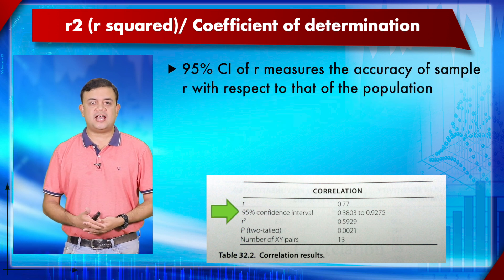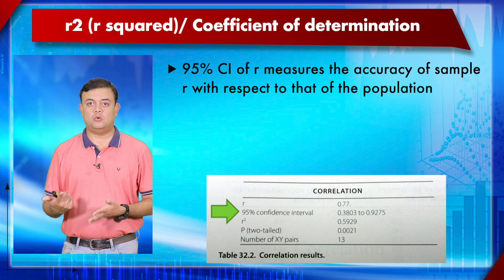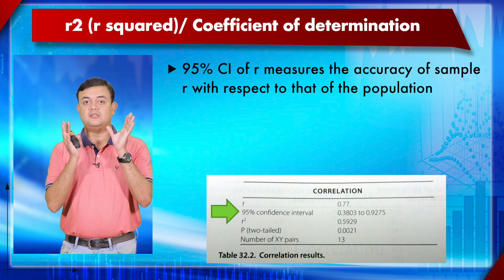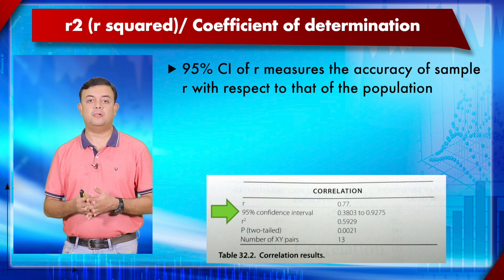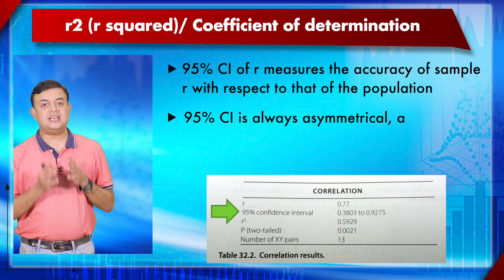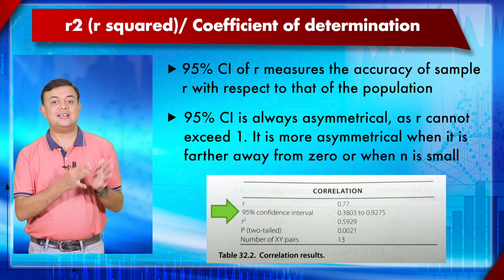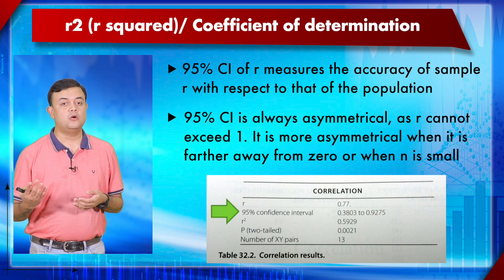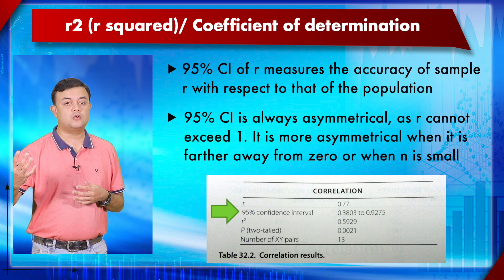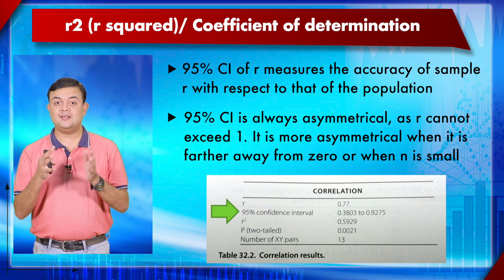The 95% CI of r measures the accuracy of the sample correlation relative to the population correlation coefficient. It is always asymmetrical because r cannot exceed 1; this asymmetry becomes more pronounced when r is further from 0, when n is small, or when r is approaching 1.